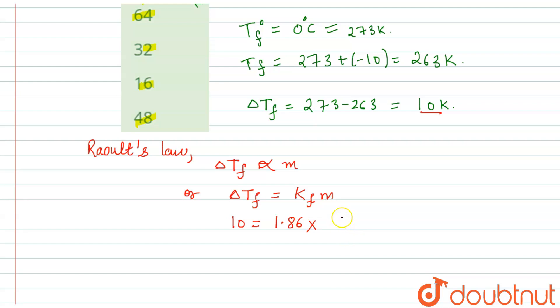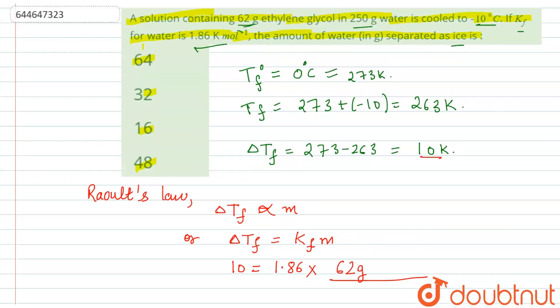Or in this case, we can write it as weight of the solute, that is 62 grams given of ethylene glycol, upon molecular mass. So molecular mass of ethylene glycol, ethylene glycol has a formula that is C2H6O2, so this is 12 for carbon, 6 for hydrogen and 16 for oxygen, so this also is 62 grams.